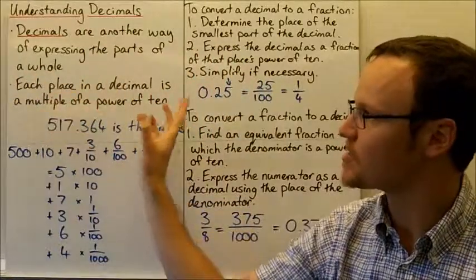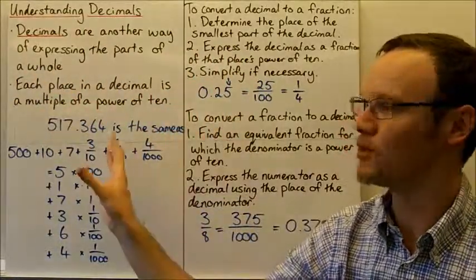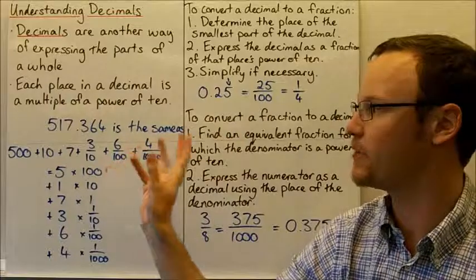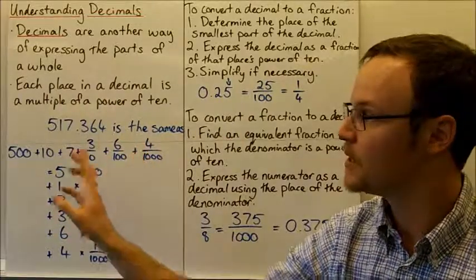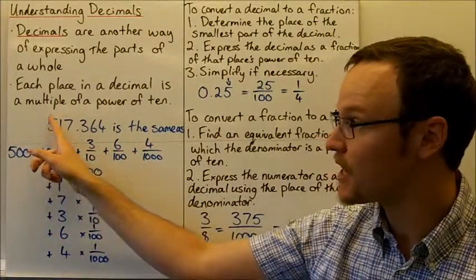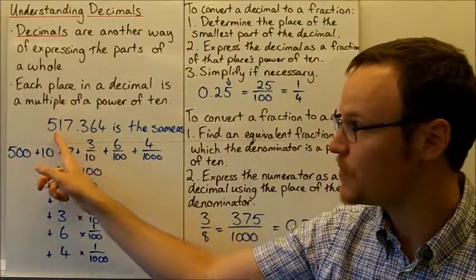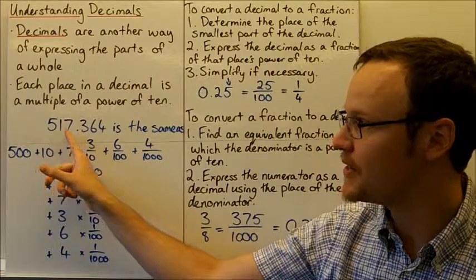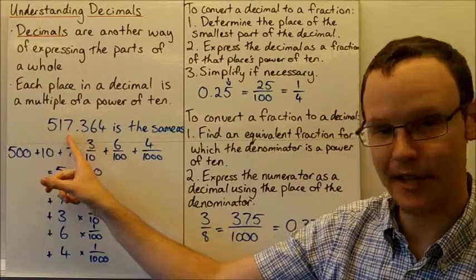Each place in a decimal is a multiple of a power of 10. So you probably already know this is the hundredths column, this is the tenths, and this is the units.